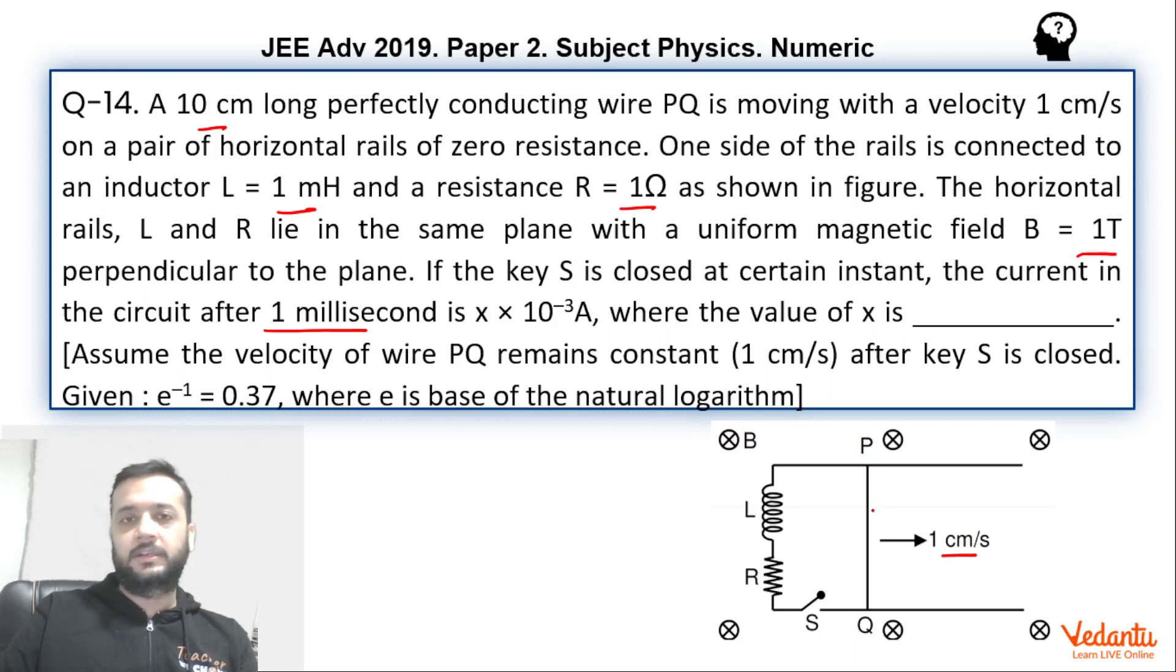Now first thing we need to realize is that there must be some external agent. Otherwise this rod cannot move at a constant speed. Because when the current starts flowing, this magnetic field will start applying force on the rod and the speed of the rod will slow down.